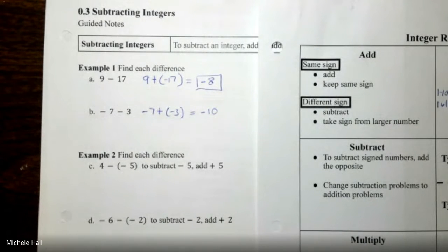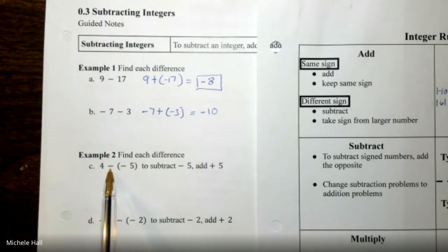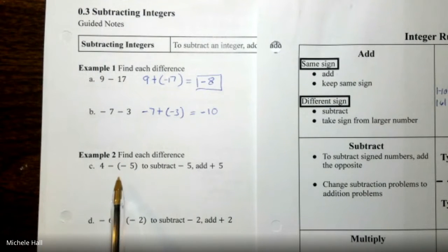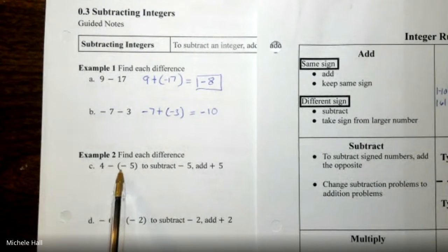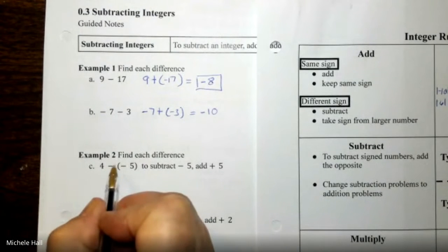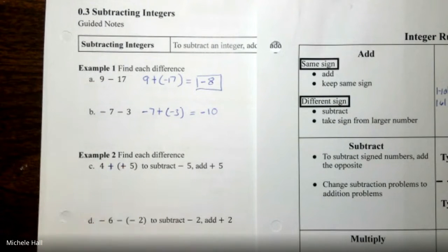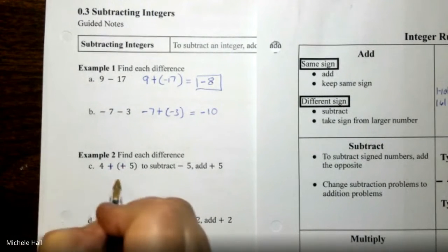In Example 2, we have two negatives — double negatives. To subtract negative 5, we are actually adding 5, because a negative times a negative is a positive. That becomes 4 plus 5, which equals 9.